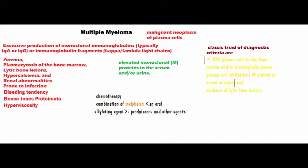Coming to the investigations, there is a classic triad for the diagnosis of myeloma, which requires at least two of the following abnormalities: more than 10% plasma cells present in the bone marrow, histologically proven plasma cell infiltration in the bone marrow, M protein — that is, monoclonal immunoglobulin light chains in blood or urine, and osteolytic bone lesions. At least two of these must be present to obtain a diagnosis of multiple myeloma.